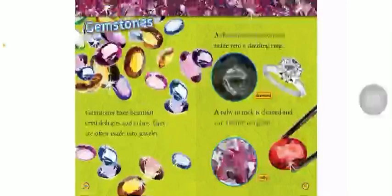Gemstones have beautiful crystal shapes and colors. They are often made into jewelry. A diamond in rock can be made into a dazzling ring. A ruby in rock is cleaned and cut, then it is a gem.